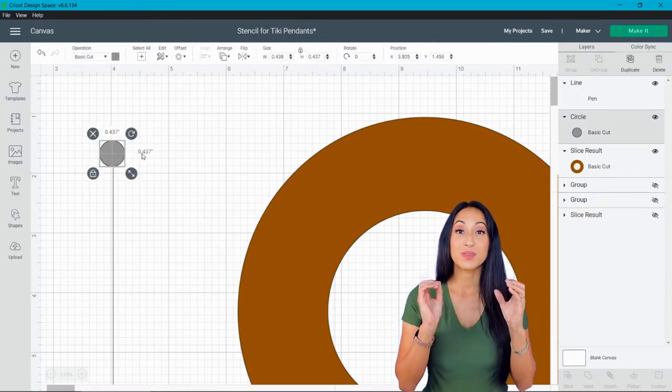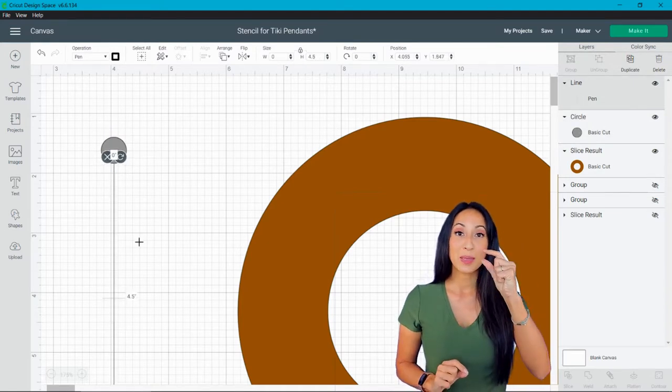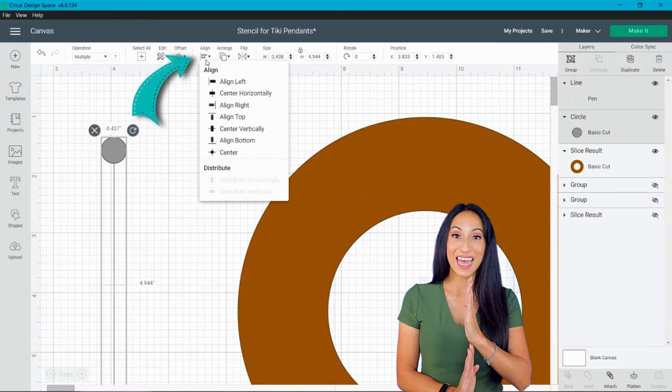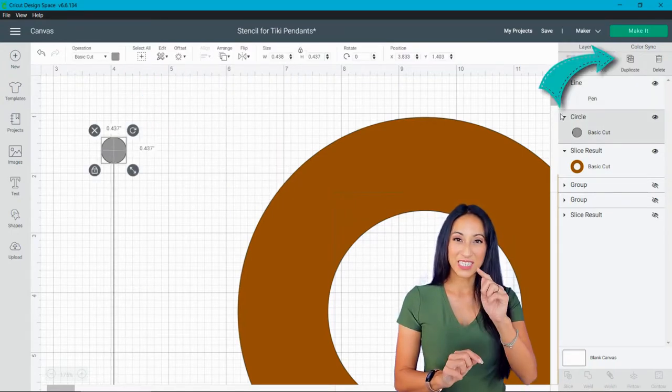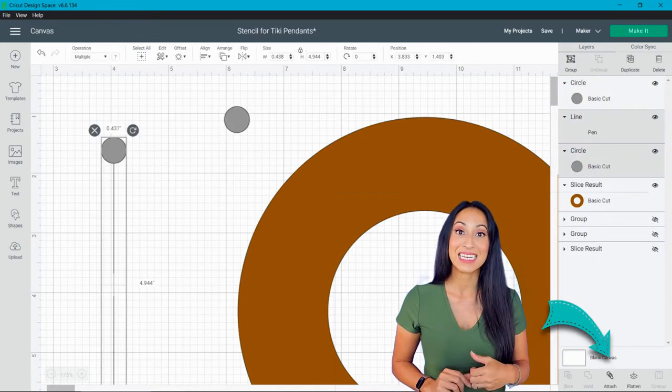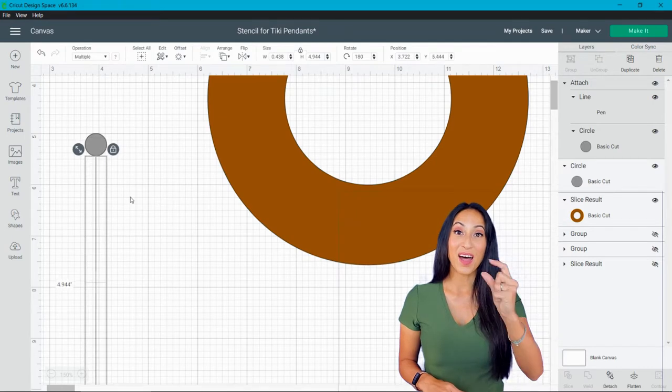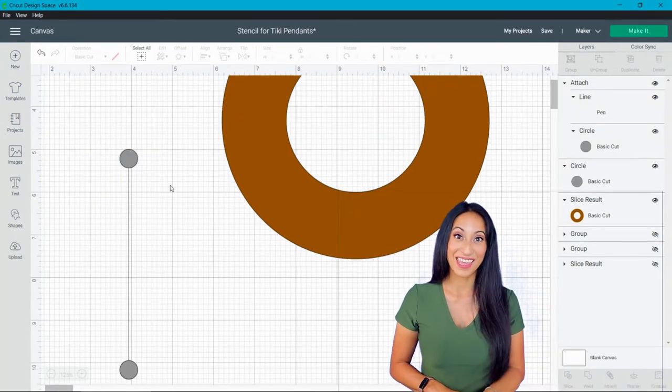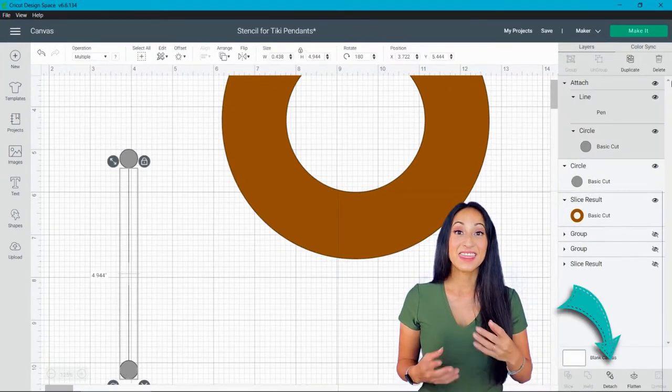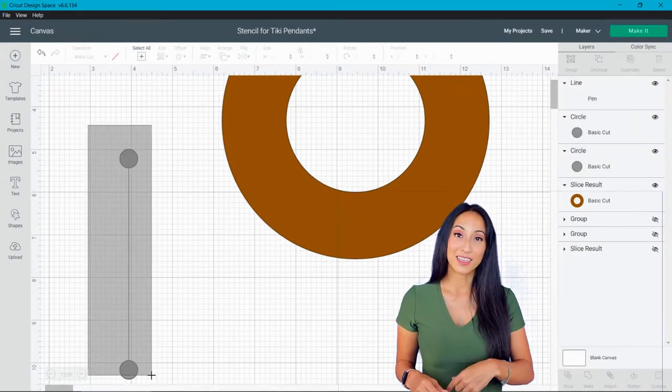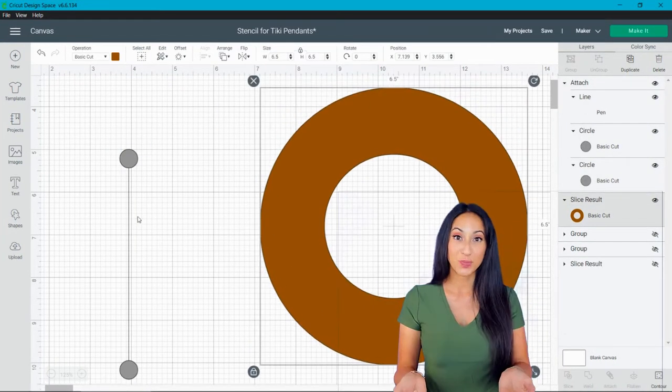And I'm going to just line up the edge of the line to the bottom. Select both, align horizontally, and since it's positioned where I want, I'm going to select them both and click Attach. And then I'm going to put a circle on the other side and do the same thing. It will make sense in a little bit. Then I'm just detaching and selecting all, and so I can have all three items attached together and duplicate.